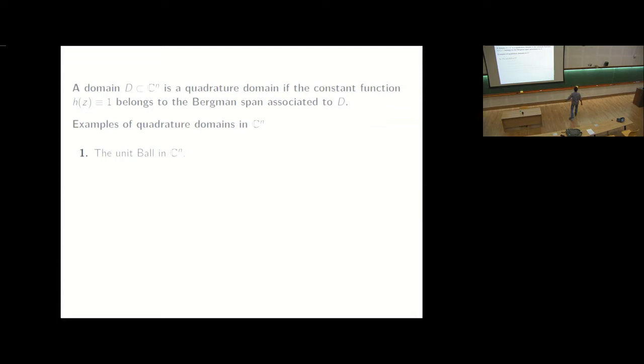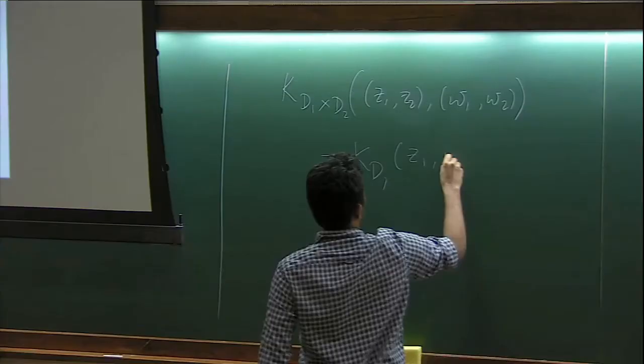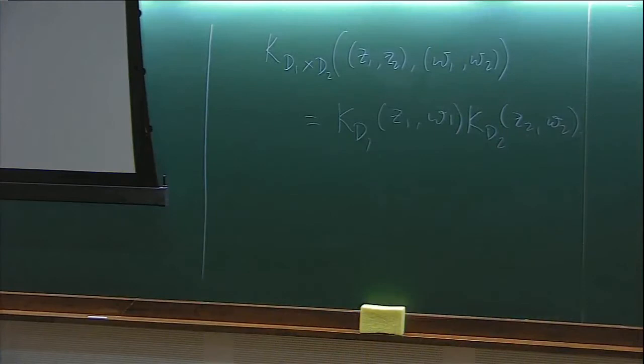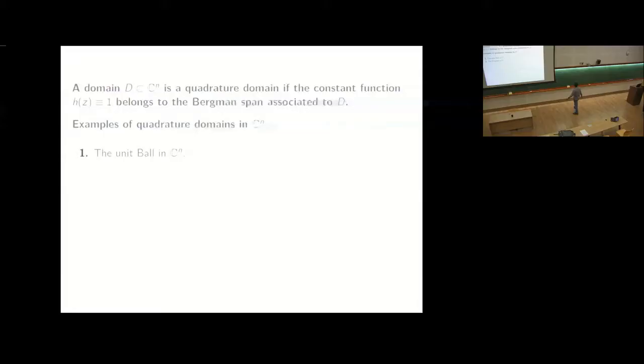The polydisc, so for the polydisc I would like to make one observation that the Bergman kernel behaves well when it comes to product. Where z1 is in d1 and z2 is in d2, this splits well. And because of this what we will be able to do is write the Bergman kernel of polydisc explicitly. We can check again that one belongs to the Bergman span of the polydisc by checking that this is identically equal to 1 or look at the Cauchy integral formula, whichever is the way you would like to look at it.